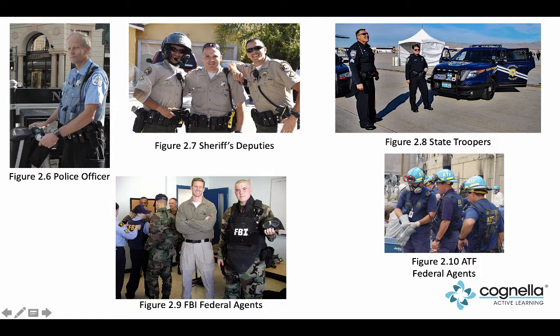Figure 2.8 shows state troopers. Most of them wear navy blue like city municipalities. However, ever so often you'll see them wear uniforms like sheriffs do. A good example is the California Highway Patrol - that is a state trooper agency, similar to Oregon State Police - but they wear brown uniforms rather than dark blue. So there can be a difference.